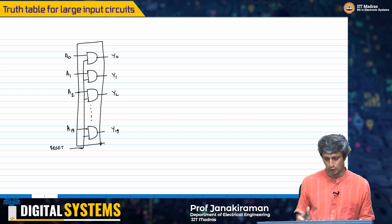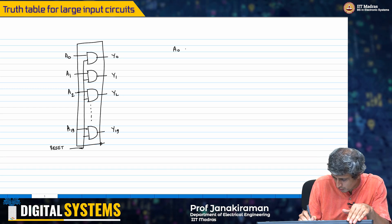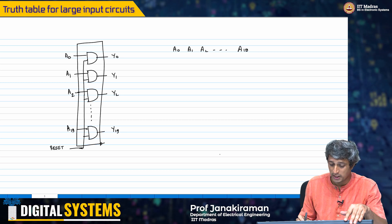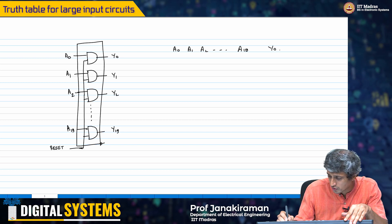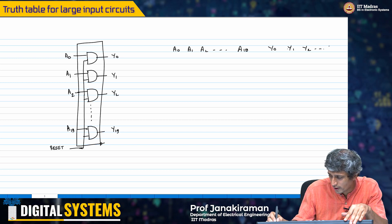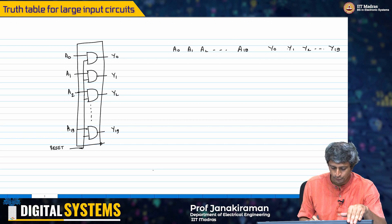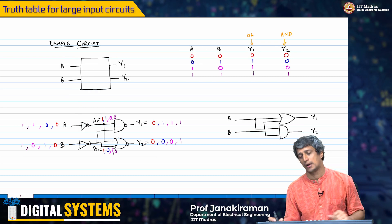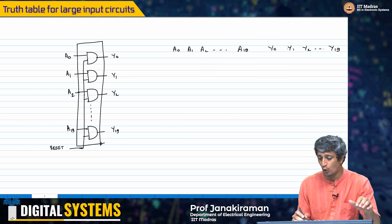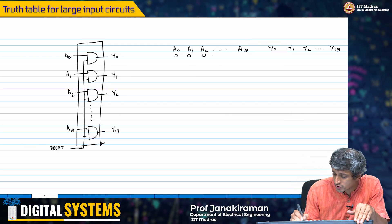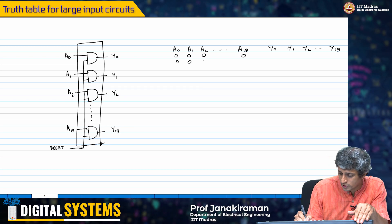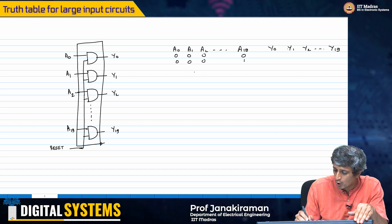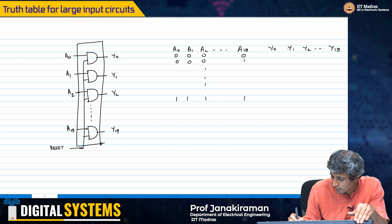You take this guy here which is the black box. Now I have A0, A1, A2, all the way to A19 - 20 inputs - and 20 outputs y0, y1, y2, all the way to y19. If I were to do exactly the same exercise that I did in the previous example, what would I do? I would simply go from all 0s, then only A19 equals 1, all the way to all 1s.